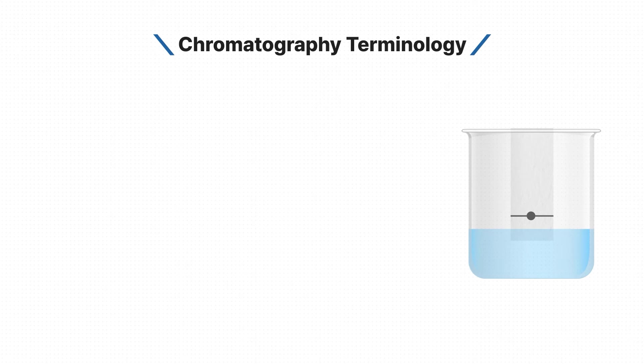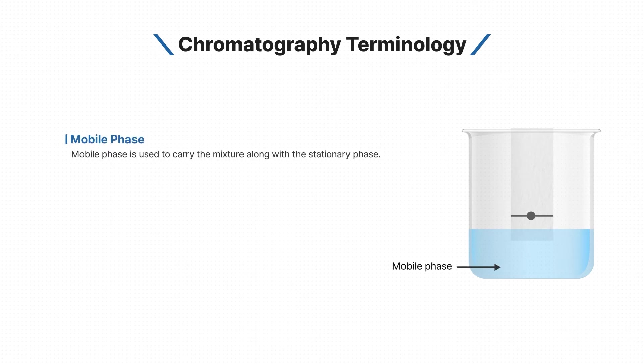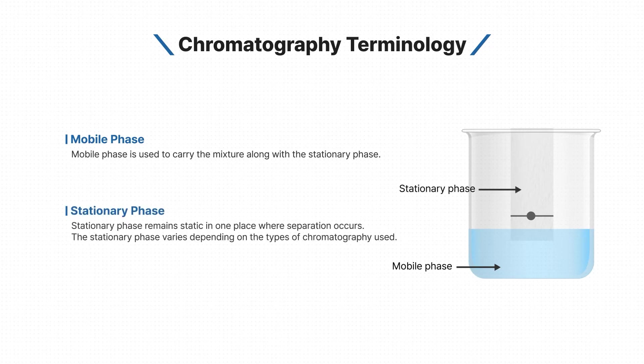Through this experiment, we can define the essential terms used in chromatography. Mobile phase is used to carry the mixture along with the stationary phase. Stationary phase remains static in one place where separation occurs. The stationary phase varies depending on the types of chromatography used.